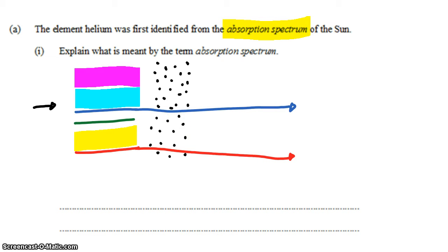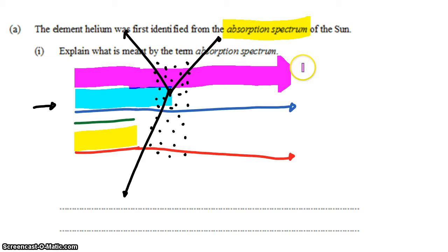Some of the colors go straight through, but other colors get absorbed and then re-radiated in a random direction as infrared radiation, as blackbody radiation. So some of the colors pass straight through. Others do not.